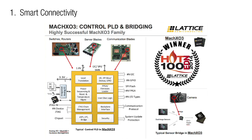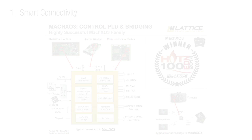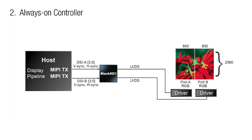Target applications of the Mach XO3 FPGA include smart connectivity: flexible interface bridging for CMOS cameras, displays, memories, and serial buses for consumer, handheld industrial, and portable medical. Always-on controller, display bridge, or sensor management. The low power and small form factor Lattice FPGAs allow the system designer to implement always-on wearable display functionality while still meeting the system's power budget.